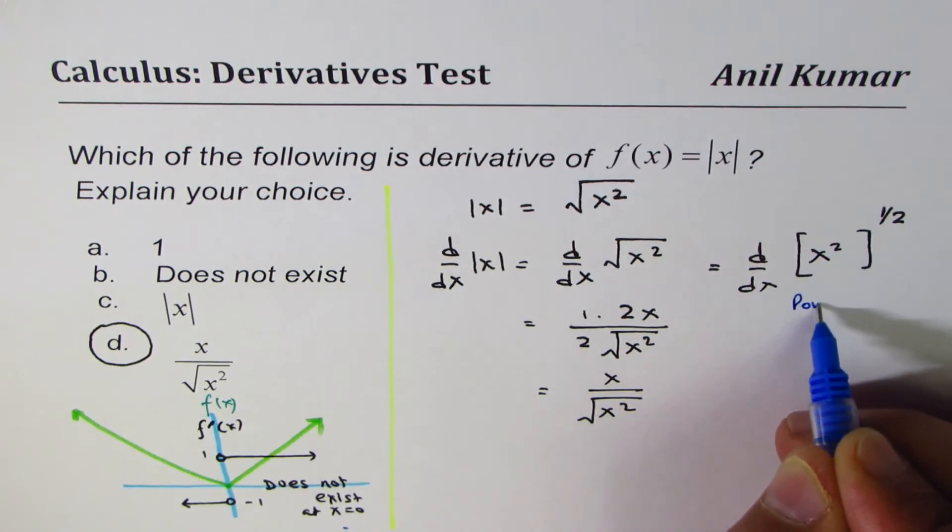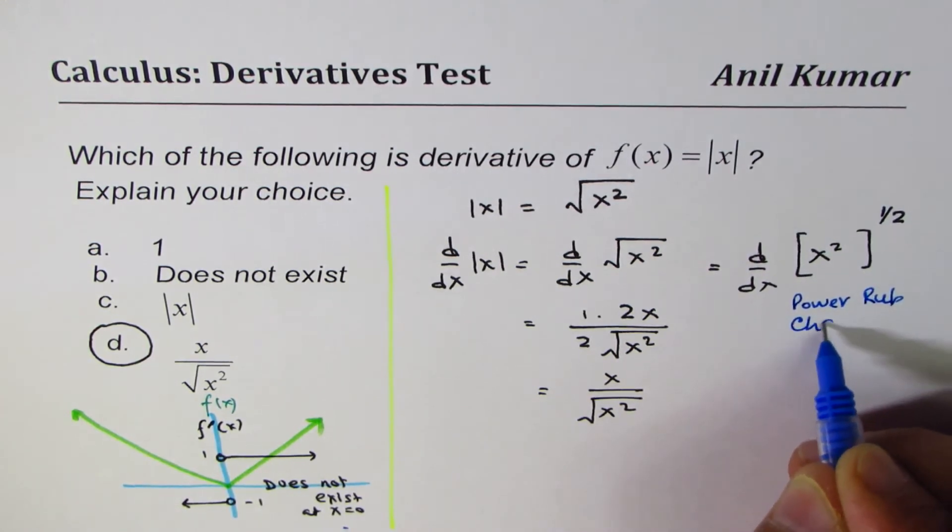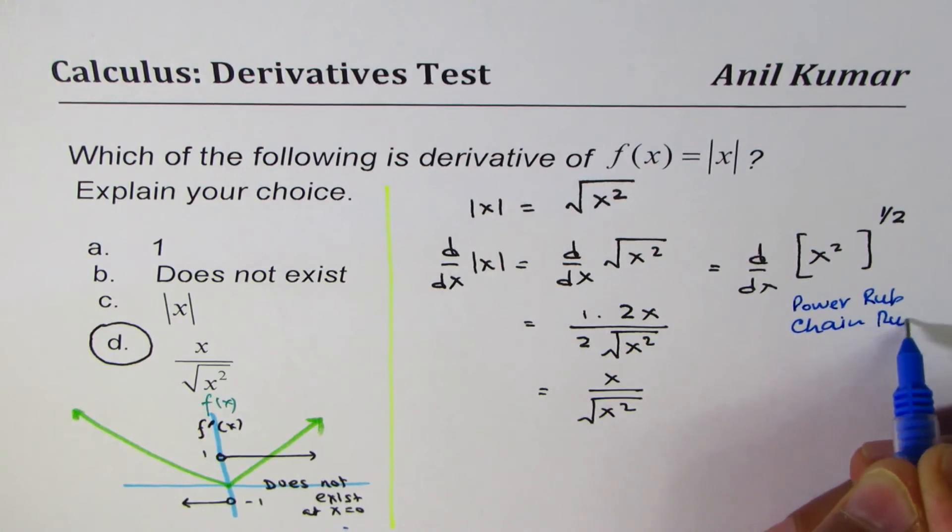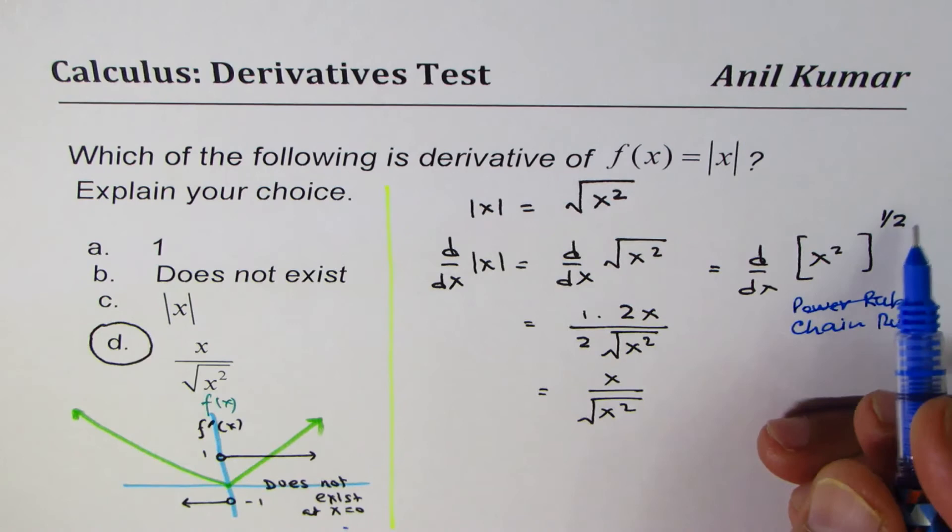So, at this stage, apply power rule and chain rule. I mean, I should say chain rule only. So, half of this to the power of minus half, correct?